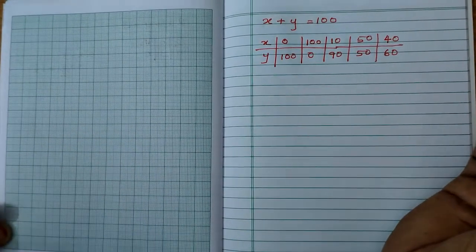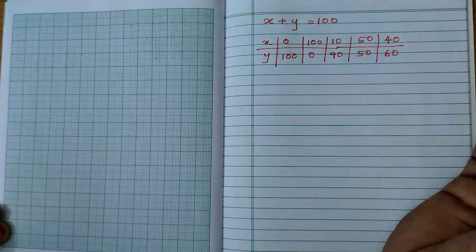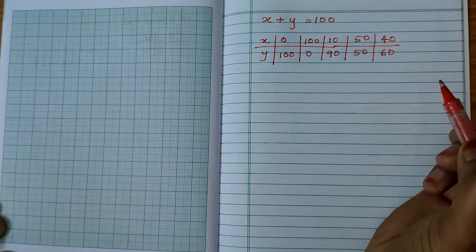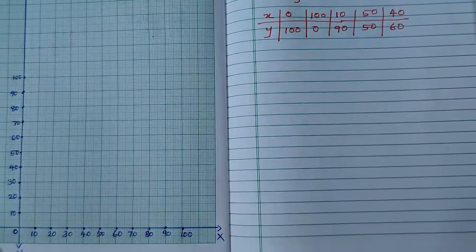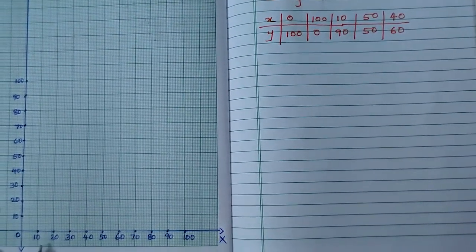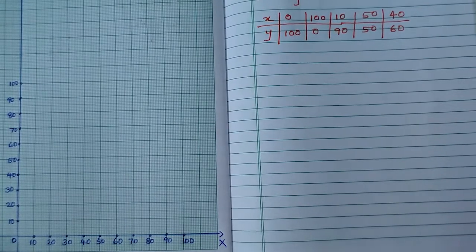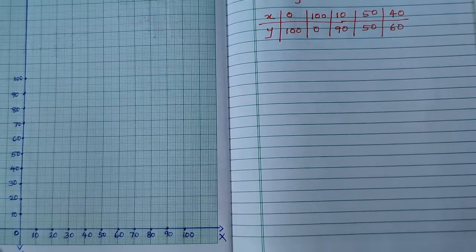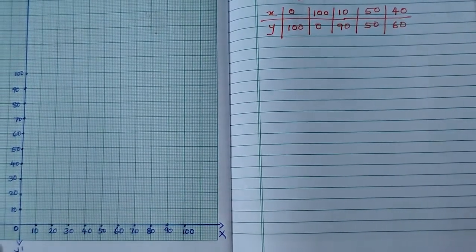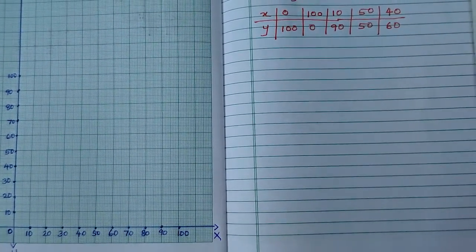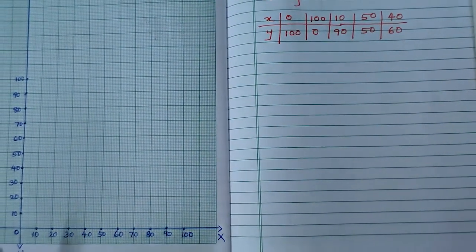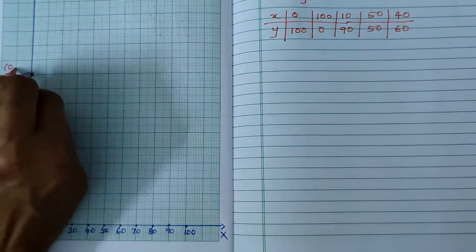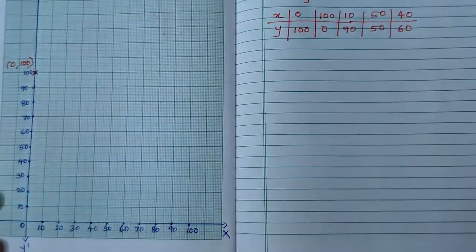I am going to show the graph of a linear equation will be a straight line. These all points, all solutions will lie on the line. Here I took each division as 10, 10 each. Because x plus y is 100, this is the easiest way to represent it. First solution is (0, 100). 0, 100 means it lies on the y axis. This point is (0, 100). Second solution, (100, 0). It lies on the x axis.